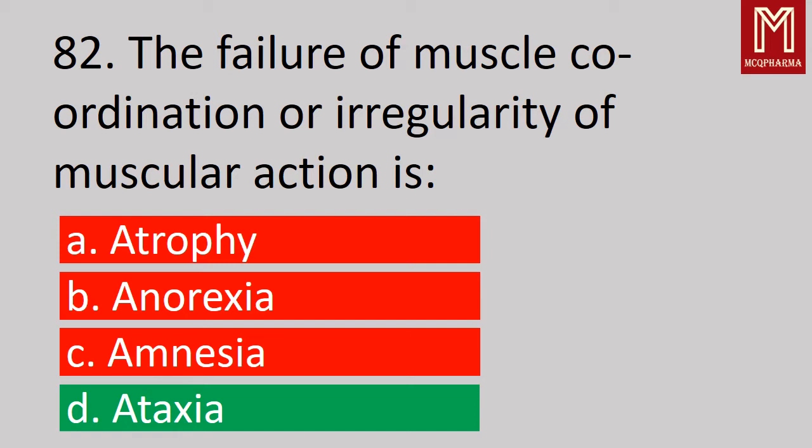Next, the failure of muscle coordination or irregularity of muscular action is — correct answer, Option D: Ataxia.